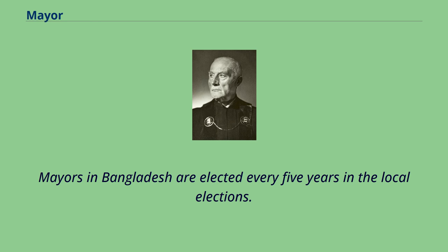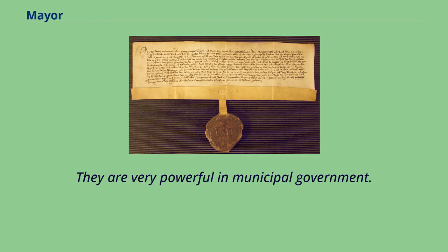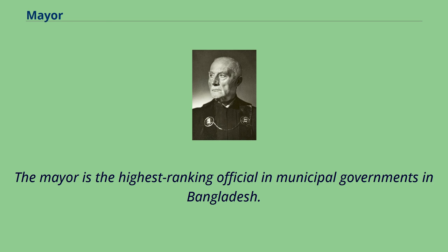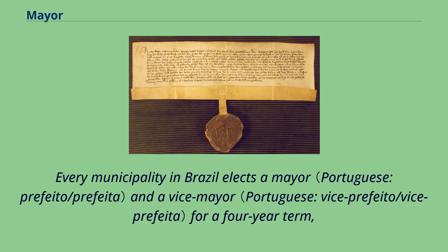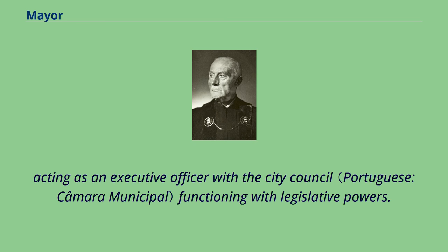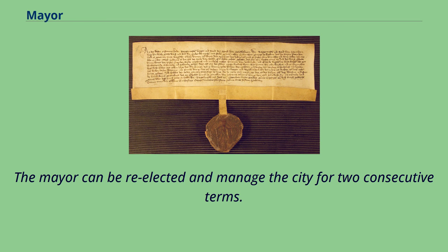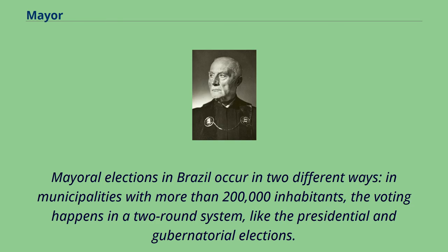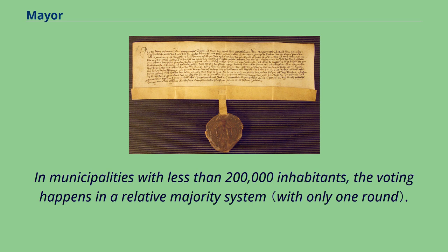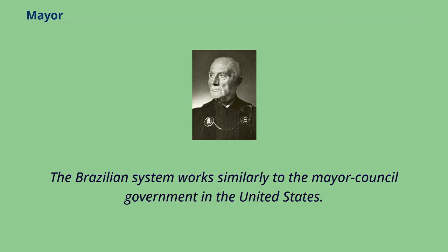Mayors in Bangladesh are elected every five years in the local elections and are very powerful in municipal government. The mayor is the highest-ranking official in municipal governments in Bangladesh. Every municipality in Brazil elects a mayor and a vice-mayor for a four-year term, acting as an executive officer with the city council functioning with legislative powers. The mayor can be re-elected and manage the city for two consecutive terms. In municipalities with more than 200,000 inhabitants, voting happens in a two-round system; in municipalities with less than 200,000 inhabitants, the voting happens in a relative majority system. The Brazilian system works similarly to the mayor-council government in the United States.